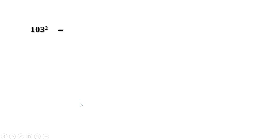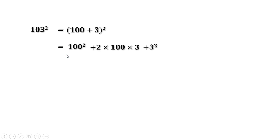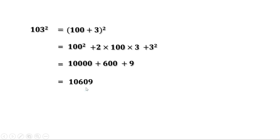Another example: 103². Write 103 = 100 + 3, so 103² = (100 + 3)² = 100² + 2 × 100 × 3 + 3². Since 100 has two zeros, 100² = 10,000. Then 2 × 3 × 100 = 600, and 3² = 9. Therefore 103² = 10,000 + 600 + 9 = 10,609.